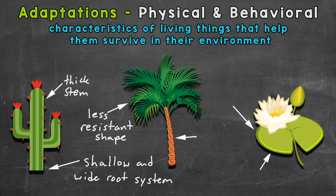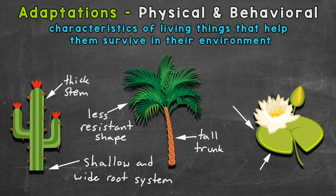Palm trees also have tall trunks. This allows them to access sunlight above other plants, giving them an advantage. Some palm trees also have the ability to grow very quickly. This would be a behavioral adaptation that gives palm trees a better chance of surviving within their environment. This quick growth will help the tree survive things like tropical storms or beating out their competition for sunlight.